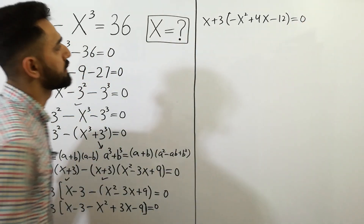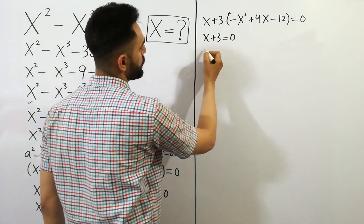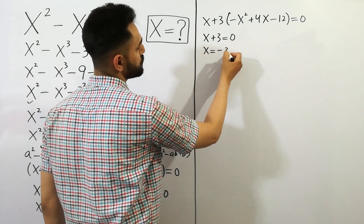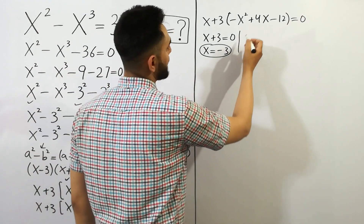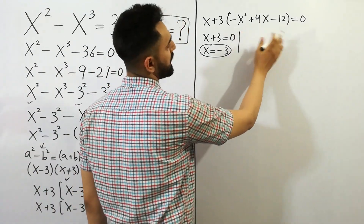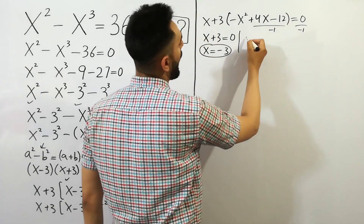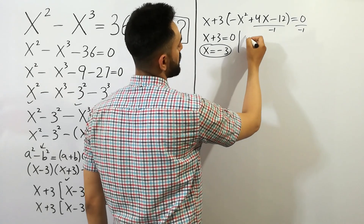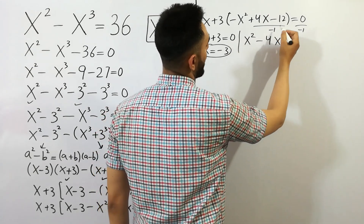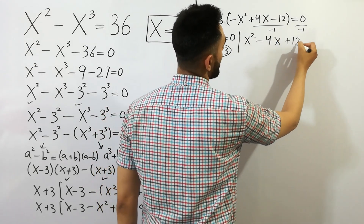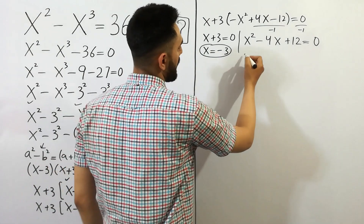So we get x plus 3 is equal to 0, giving x is equal to minus 3. And for the second factor, dividing by minus, we get x squared minus 4x plus 12 is equal to 0.